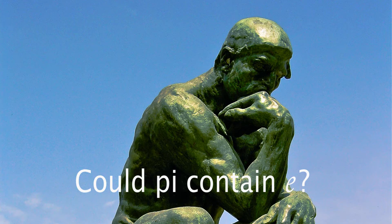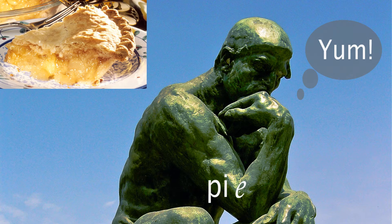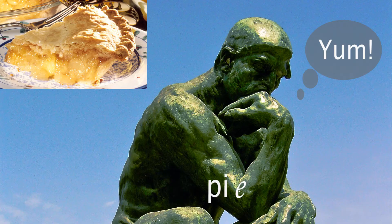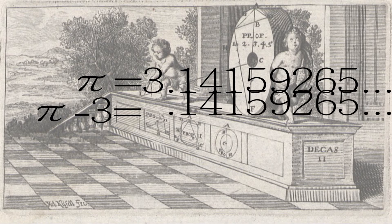But could Pi contain E? Dad jokes aside, it's certainly possible for one irrational number to contain the digits of another. Pi minus 3 is irrational, and all of its digits are obviously contained within Pi.